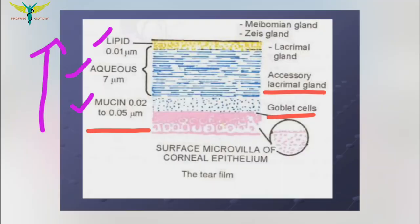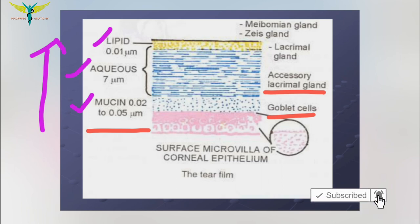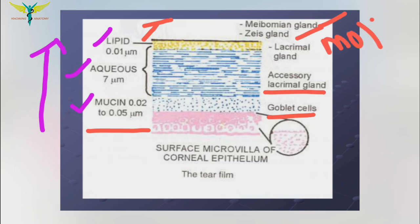The third layer is the lipid layer. It is the outermost layer and the thinnest layer of the tear film. This lipid layer is in contact with the air and is formed from the secretions of the Meibomian glands and also Moll glands. As it is present at the outermost part of the tear film, it prevents the overflow of tears and lubricates the eyelids.